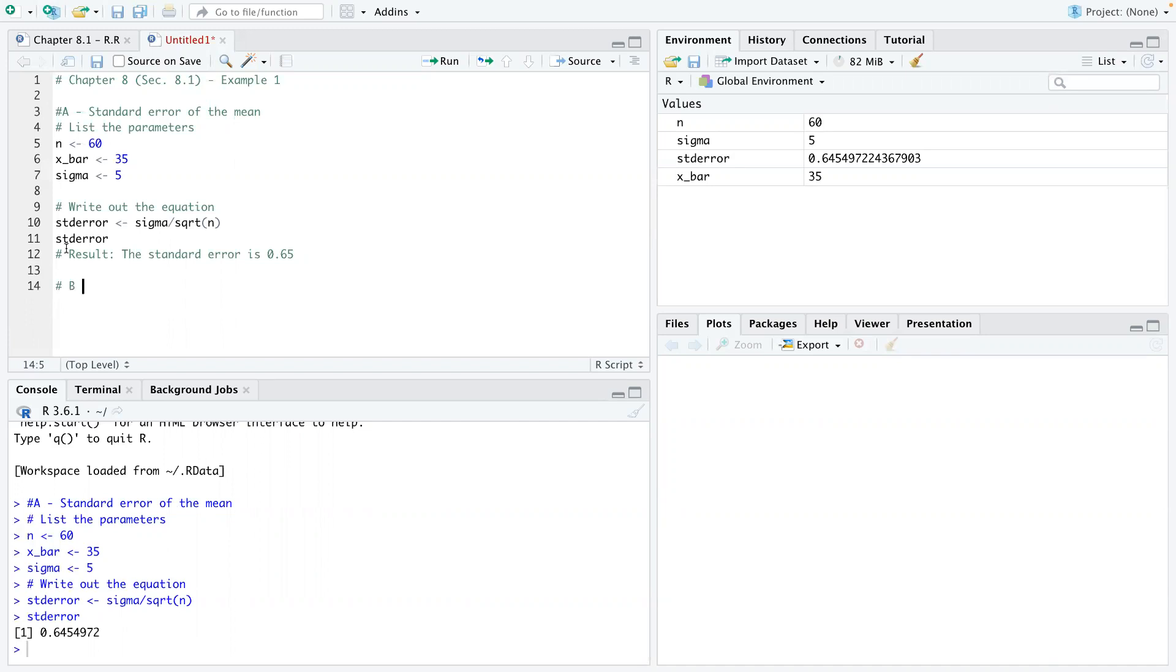Now for B, it's the margin of error. And we're given 95% confidence. And I've explained to you guys what the confidence is all about in class.